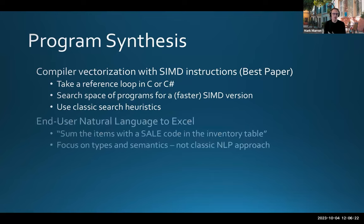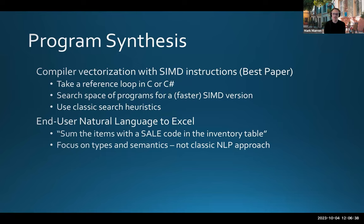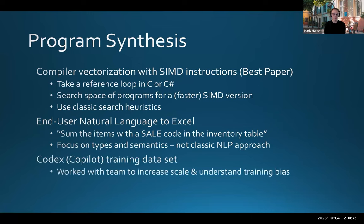When I joined Microsoft Research, I worked on what's called programming by natural language or programming by example. Someone would say, 'I have an Excel spreadsheet and I want to sum all the items in the table with a sale code,' and you would generate the appropriate Excel formula for somebody who doesn't necessarily know how to program. I also worked with the Copilot team on training and bias in the training data for the first version of Copilot, coming back to natural language processing but using deep learning rather than synthesis.